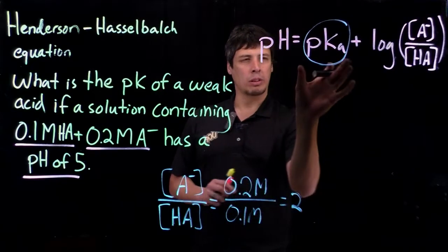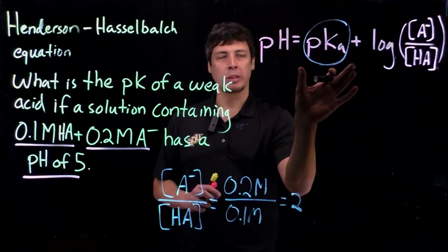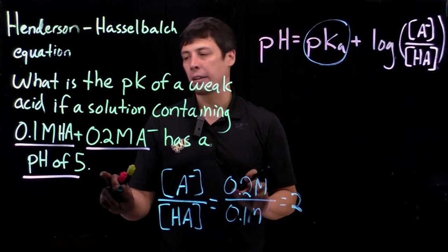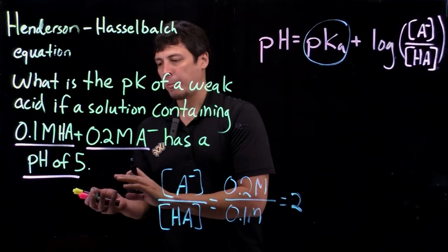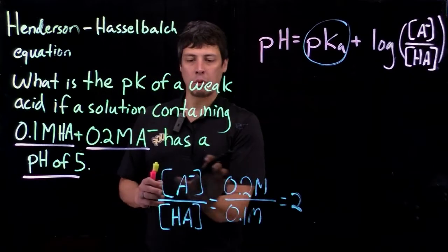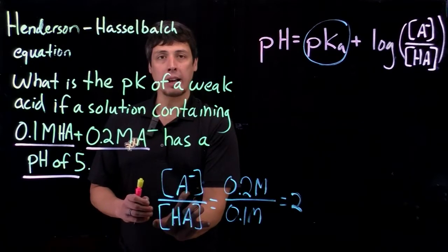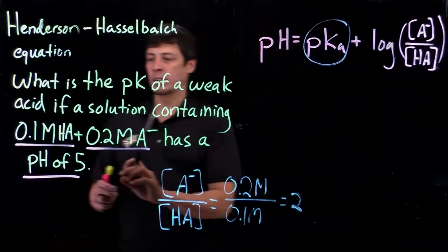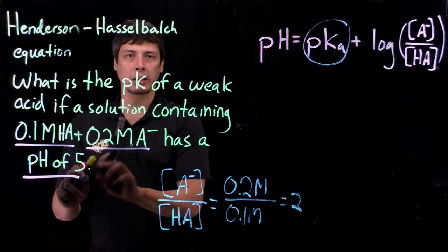So that means we expect that the pKa is going to be similar to the current pH that we have. And the other thing we know is that we have more base than we have acid. So what that also means is that we expect the pKa to be slightly less than 5.